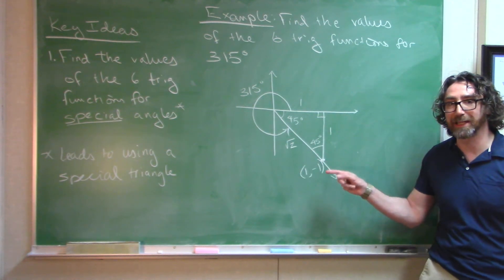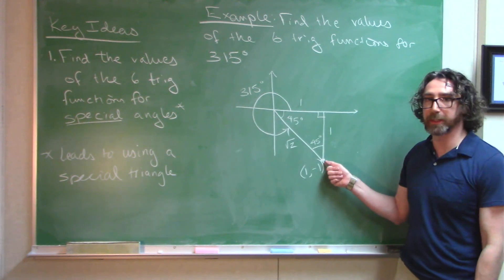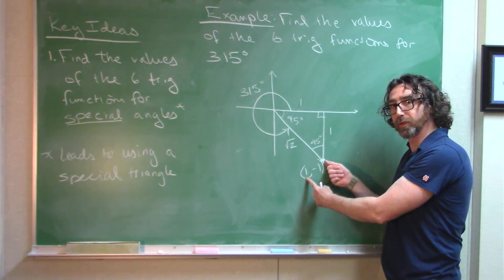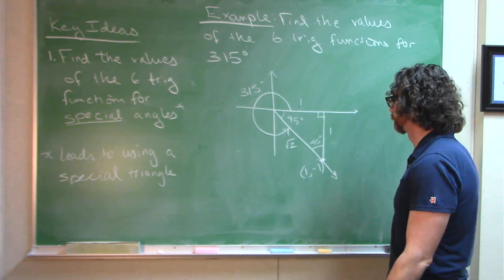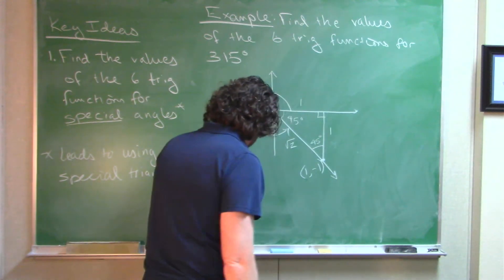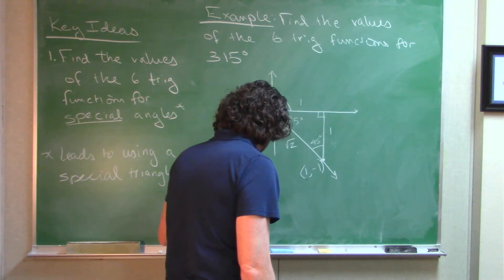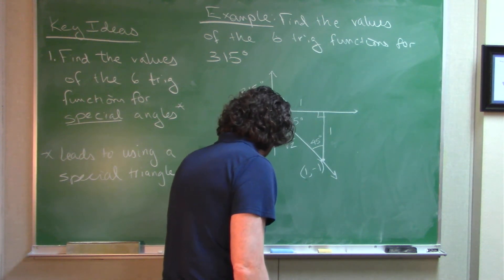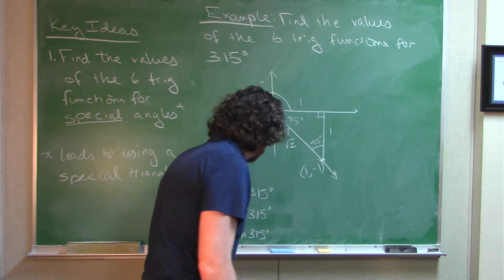Once again, actually write down your coordinates here and pay attention to the signs. If I want to get to this point in the x-y plane, it's going one unit to the right. The x-coordinate is positive. One unit down, so the y-coordinate is negative. Cosine 315 degrees, sine 315 degrees, tangent 315 degrees.